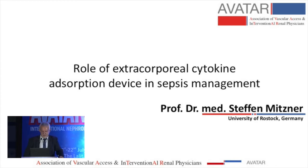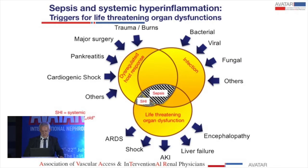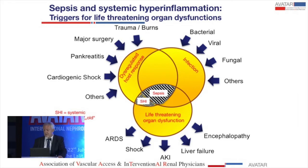We heard about the pathophysiology, so I think in the sake of time I can skip this. You know all of this — that sepsis induces life-threatening organ dysfunction, and you have different ways for your patient to get into that, with the dysregulated host response, infection, or combination of both. There are various entryways for infection, as well as for what we called SIRS in the former time — what today we could call systemic hyperinflammation. And if this leads into organ dysfunction, this will raise the death rate of these patients.